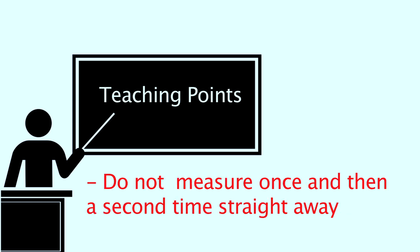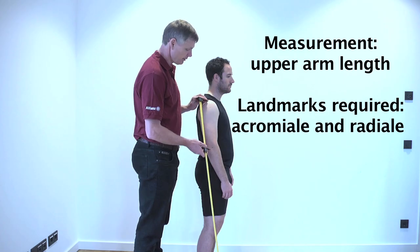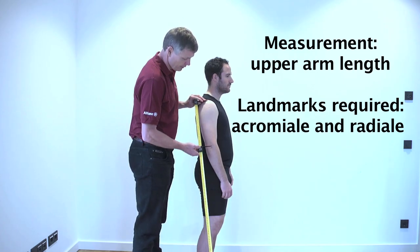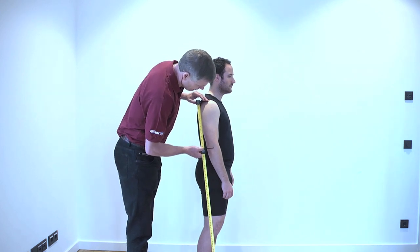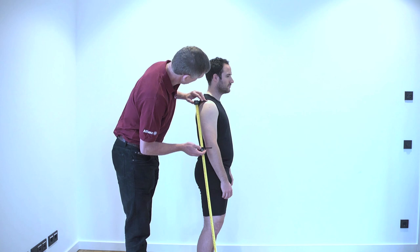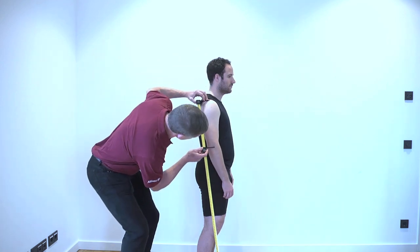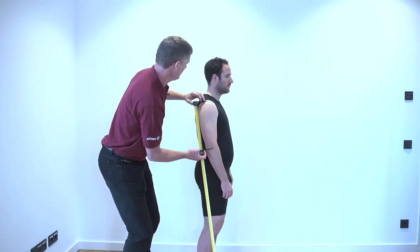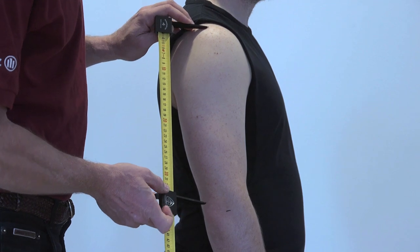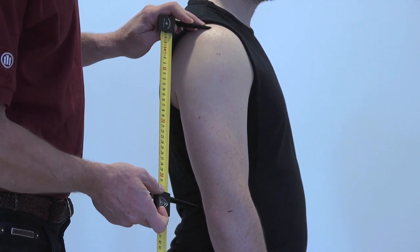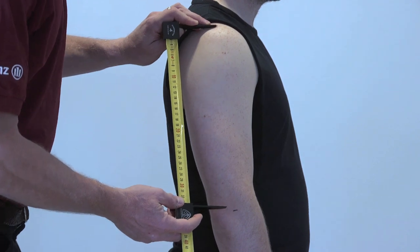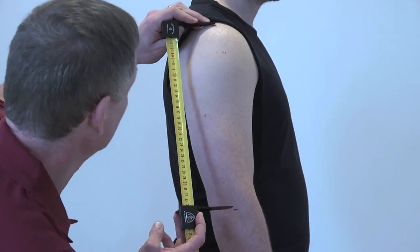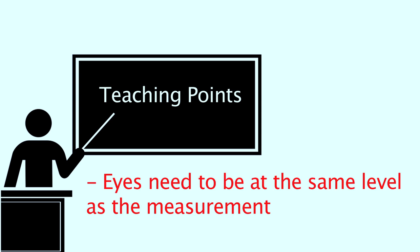Teaching points: complete all measurements required for trial 1 before taking your measurements a second time — don't measure once and then a second time straight away. Upper arm length is the distance between the acromiali and the radiali. The athlete assumes a relaxed standing position with the arms hanging by the sides and the right forearm pronated. One branch of the segmentometer is held on the acromiali while the other branch is placed on the radiali. If the branches are too short to allow clearance of the deltoids, a large sliding caliper may be used. Be sure your head is right down at the same level as the measurement display, otherwise reading errors can occur.